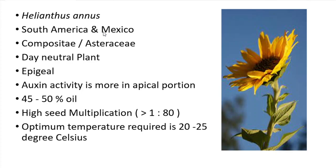Sunflower is a day neutral plant where an intermediate day length of 12 to 14 hours is required for its growth. The germination found in sunflower is epigeal germination, where the cotyledons of the seeds remain above the soil during germination. Auxin activity is more in the apical portion of the sunflower, and hence you can find sunflower moving towards the direction of sunlight.